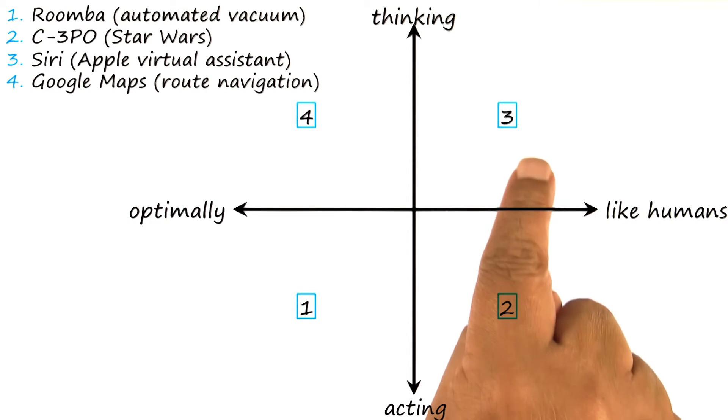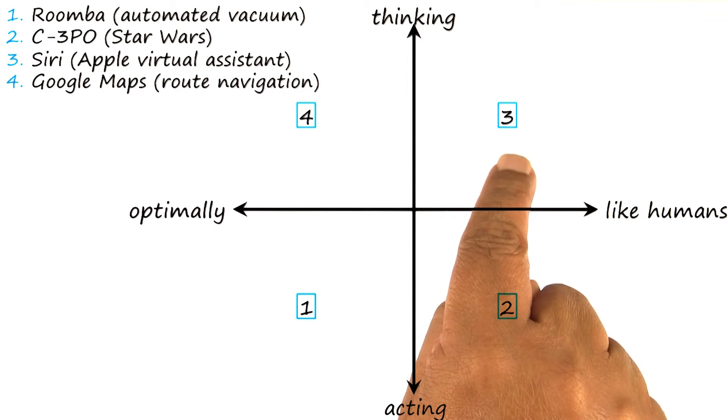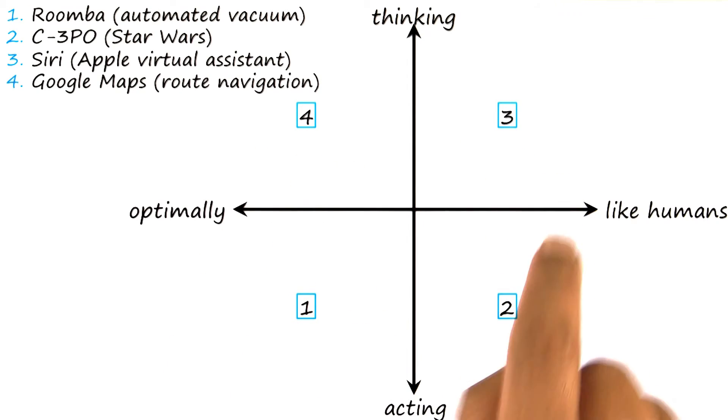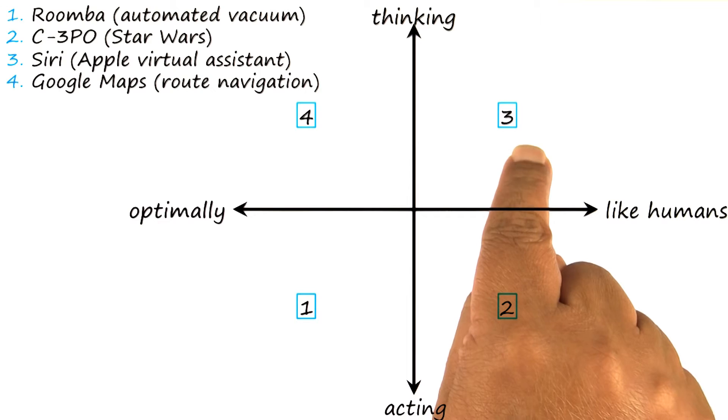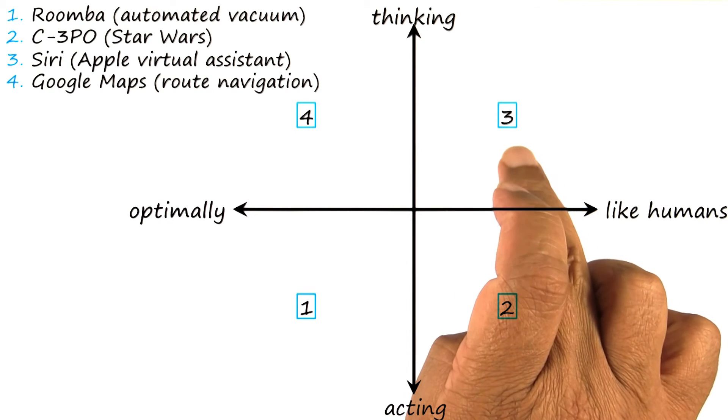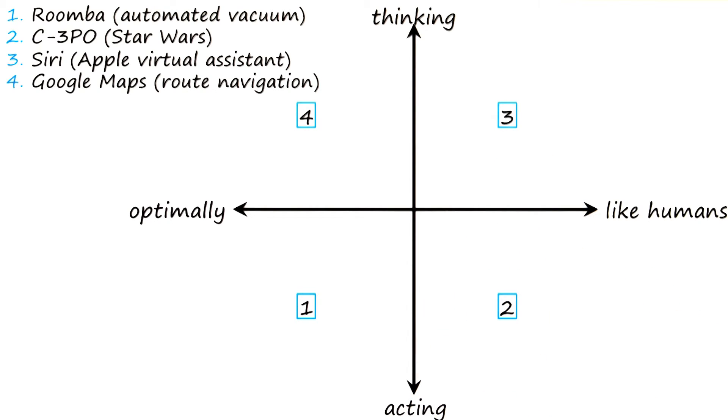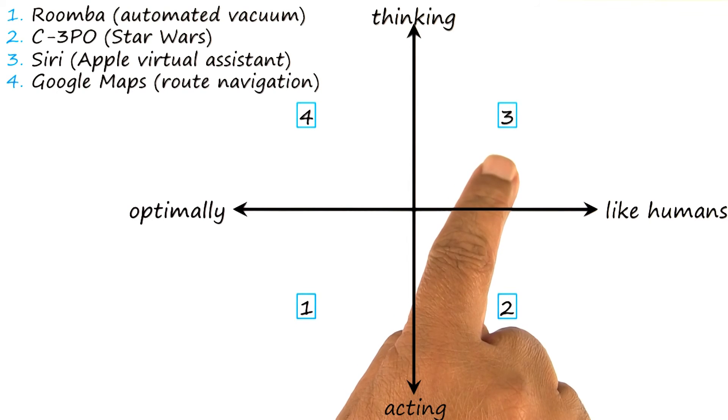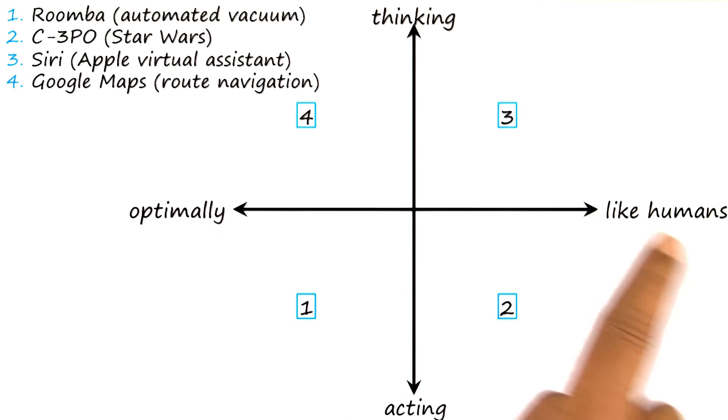But note here that some aspects of Siri may well belong to some of the other quadrants. So putting it under quadrant 3 sounds plausible. But Siri might also be viewed as perhaps acting when it gives you a response. Some aspects of Siri might also be optimal, not necessarily like humans.